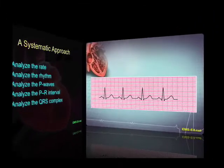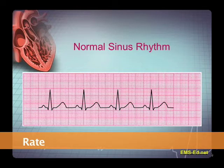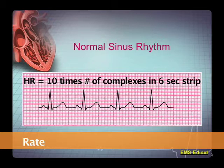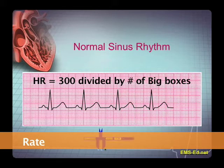So now let's jump in. Before we know what is abnormal, we need to know what is normal. Let's be systematic. First, what is the rate? We could count the number of complexes in a 6-second strip and multiply by 10 to get our heart rate. But this is not a 6-second strip — no problem. Count the number of big boxes between R waves and divide that number into 300, and that is the heart rate.